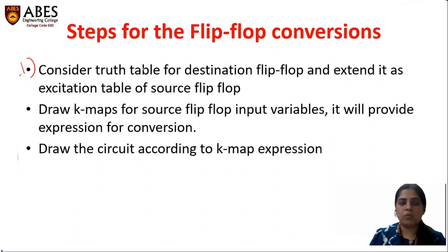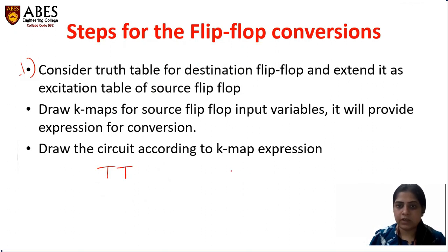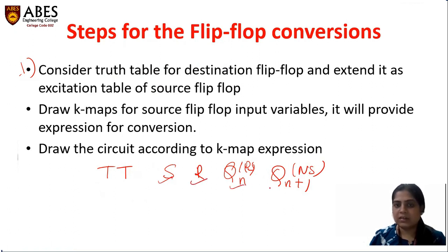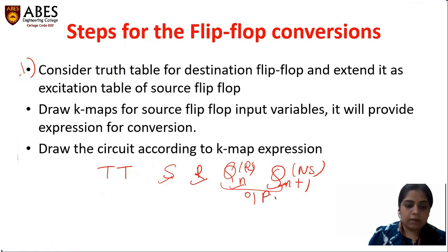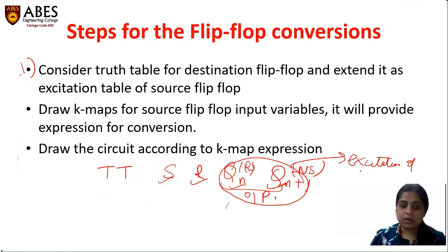So here is our first step. You have to make the truth table of the destination flip-flop and the excitation table of the source flip-flop. The last two columns in our truth table are the present state and the next state. For example, making the truth table of SR flip-flop: these are our inputs and these are our outputs. These two columns are the starting columns of the excitation table of any flip-flop.